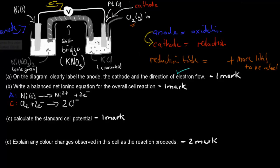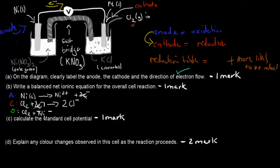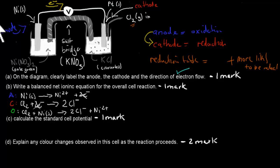For the overall net ionic equation, combine the two half-equations and cancel the electrons. Write: Cl₂(g) + Ni(s) → Ni²⁺(aq) + 2Cl⁻(aq). Chlorine takes the electrons from nickel; nickel becomes oxidized and chlorine is reduced. That is your balanced overall equation, earning the mark for Part B.